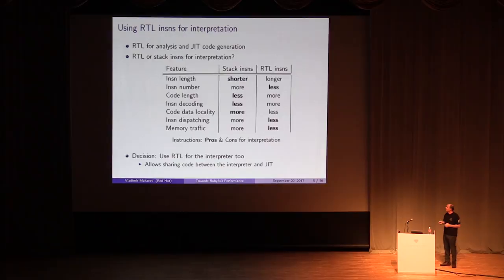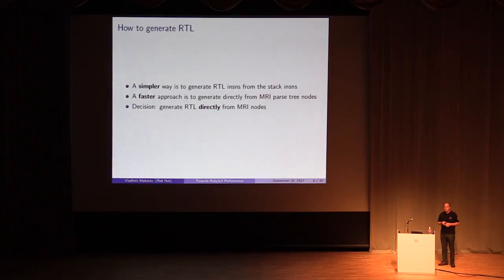Now, how to generate RTL? We could generate RTL directly, or generate RTL from stack instructions, and probably that would be the simplest approach. But as we use RTL for interpretation, stack instructions will live only during RTL generation. I think that generating RTL directly from MRI abstract nodes or parsed nodes is a better approach. Also because it makes MRI faster, although it needs to rewrite the MRI file compiled.c completely.